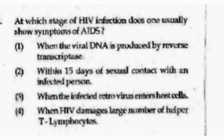At which stage of HIV infection does one usually show symptoms of AIDS? Options are: when viral DNA is produced by reverse transcriptase; within 15 days of sexual contact with an infected person; when the infected retrovirus enters the host cell; or when HIV damages a large number of helper T lymphocytes. The right answer is option number 4, When HIV damages a large number of helper T lymphocytes.